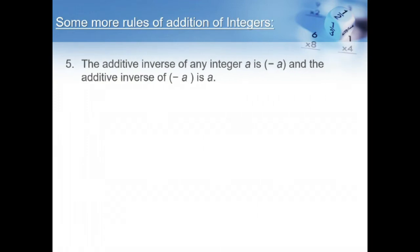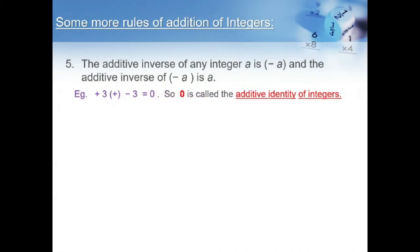Today, we are going to learn something more about integers — specifically the additive inverse of an integer. What is an additive inverse? It is an integer with a negative sign, or we call it the opposite sign. That means if it is a positive integer, then the negative integer will be the additive inverse. The additive inverse of any integer a is minus a, and the additive inverse of minus a is a. For example, if we take the positive integer 3, then minus 3 will be the additive inverse of 3.